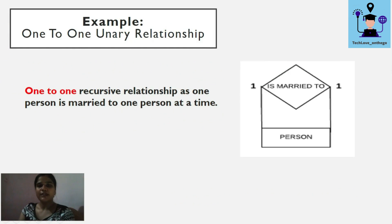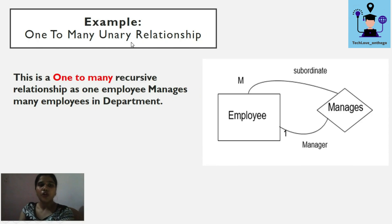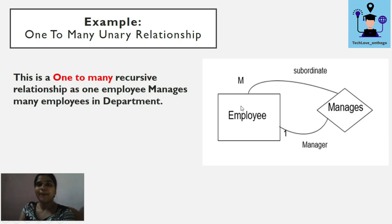For a unary one-to-one relationship: one person is married to one person at a time, so one person from this entity set is married to only one other person — this is a one-to-one unary relationship. For a one-to-many unary relationship: one employee manages many employees — one employee will manage many others, so we write '1' on one side and 'M' (many) on the other.